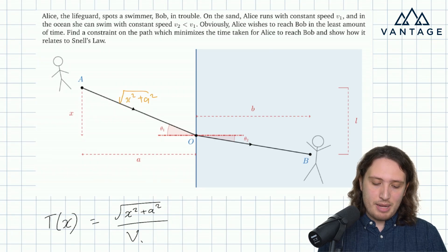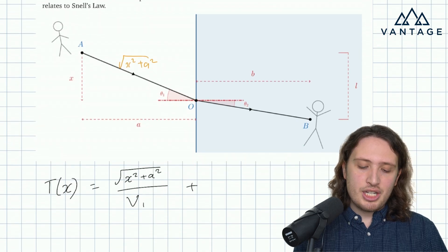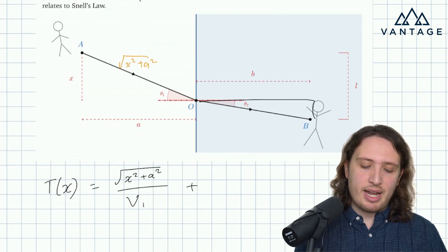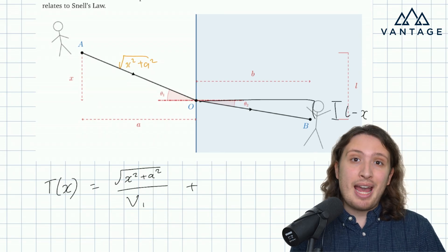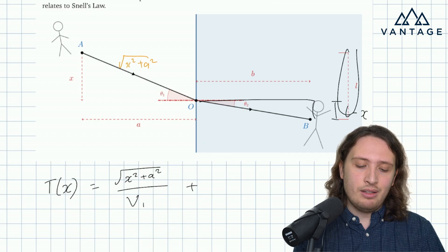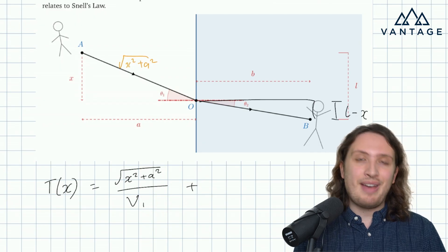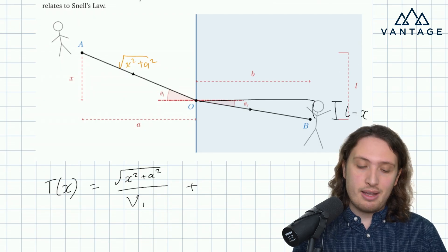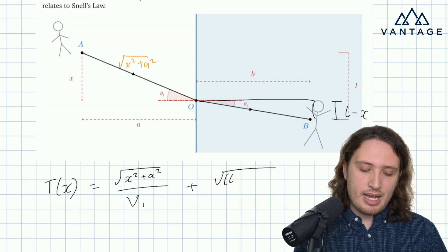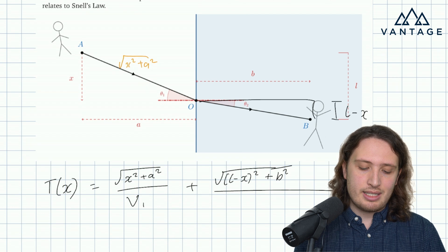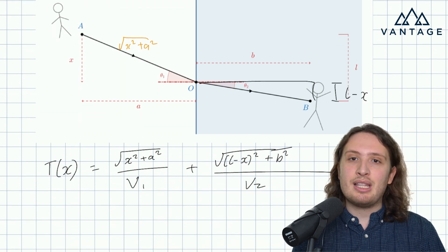Similarly, when she swims, we have a right-angled triangle. This length here is l minus x, just by comparing distances, because this is l but we've already taken account of x from the earlier portion of the journey. So by Pythagoras, the distance is the square root of (l minus x)² plus b², and that divided by V2 gives the time.